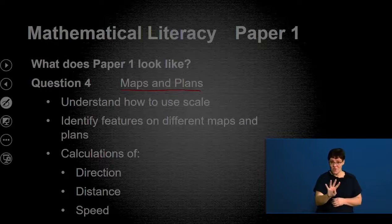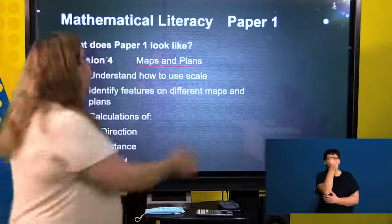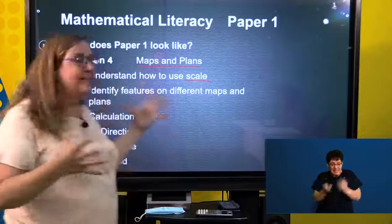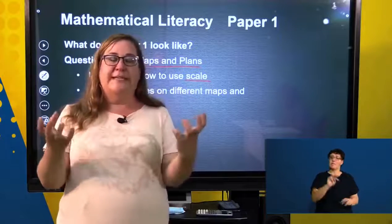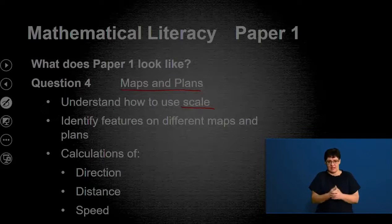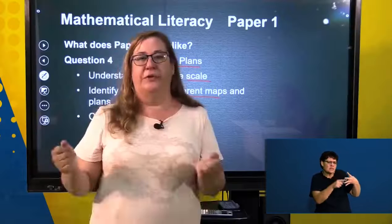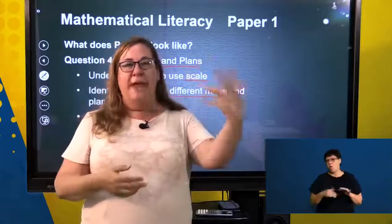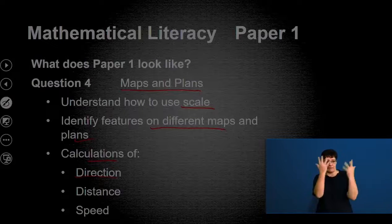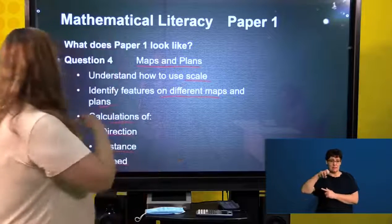Question four is maps and plans. We need to, on a map, first of all, understand how to use a scale of a map. And really important to remember that a scale is not necessarily only referring to a map. It could actually be a scale of, let me take an ant and make it bigger. That would also be a scale. But scale and understanding that. Identify features on different maps and plans. Identifying the windows of a house. Identifying a main road on a map of South Africa. Then we're going to do calculations, which include directions, distance, speed is a very good one. So these are all things that come into question four.